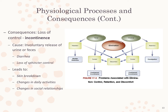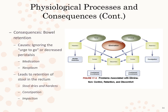Physiologic consequences of incontinence include loss of control, involuntary release of urine or feces, diarrhea, loss of sphincter control leading to skin breakdown, changes in daily activities, and changes in social relationships. Bowel incontinence is the involuntary passage of stool, ranging from occasional leakage while passing gas to a complete loss of bowel control. It can occur with diarrhea and forceful intestinal peristalsis. Complete incontinence usually results from loss of sphincter control due to traumatic injury, pathologic changes to the rectum, neurologic injury, or changes in cognition.